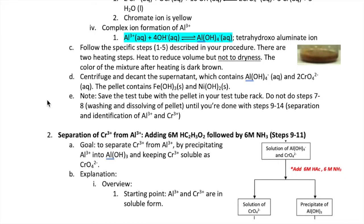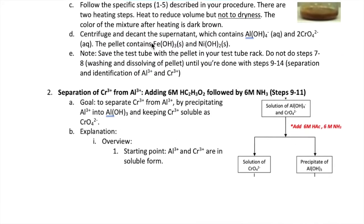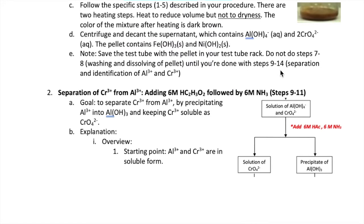Hi everyone, welcome back. We're continuing here with our Group 3 cation separation. Recall that you had saved the supernatant from the original sample which contains aluminum and chromium ions. Here you want to continue to steps 9 to 14, which is for the separation and identification of aluminum and chromium ions.